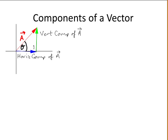This is a right angle triangle here. So we can find the vertical component and the horizontal component in terms of a and theta using trigonometry.